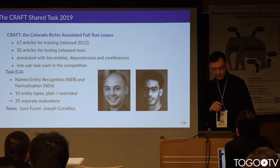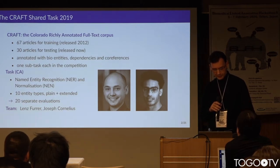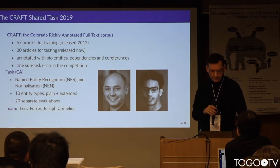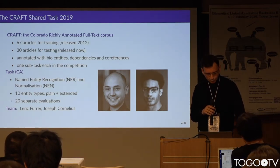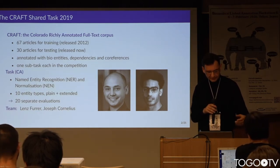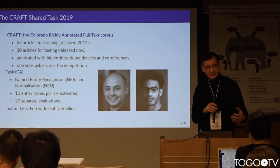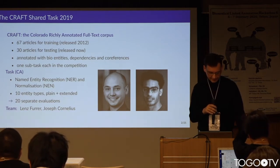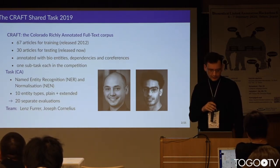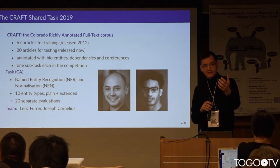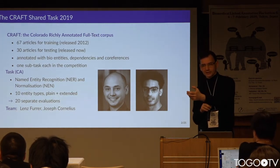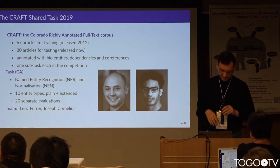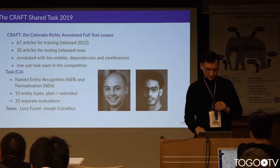The CRAFT corpus contains 67 full-text papers annotated for different entity types using many different ontologies. As part of the task, we were asked to recognize entities in a hidden set of 30 articles — not only recognizing the span of the entities, but also disambiguating each entity with respect to its source ontology. So it's both entity recognition and entity disambiguation, or entity linking.